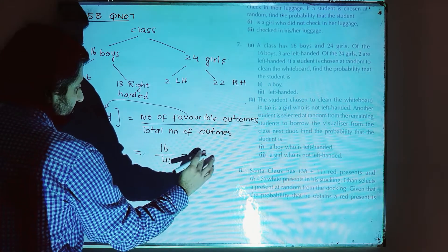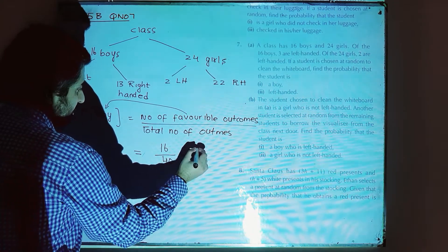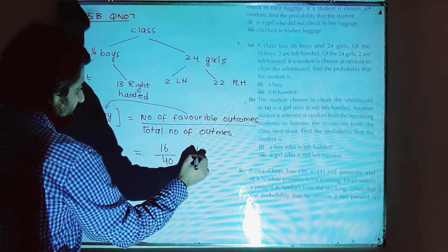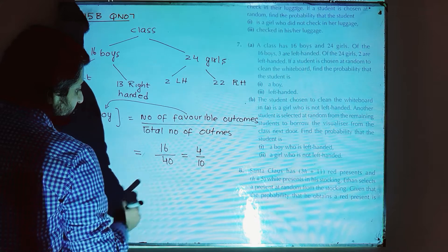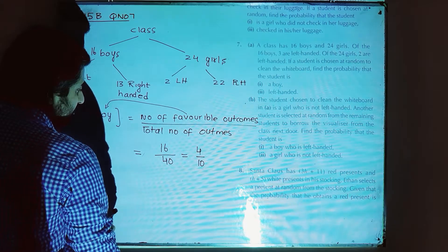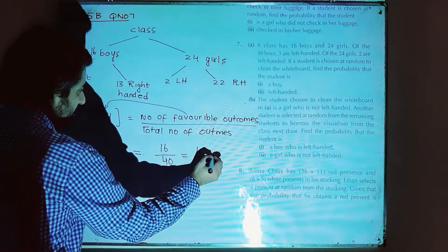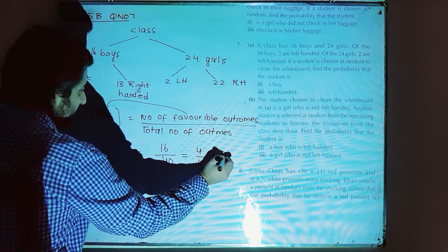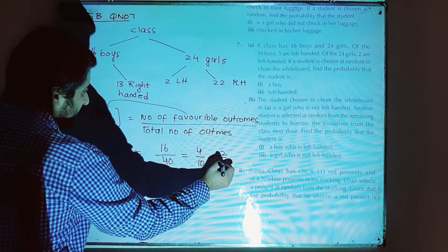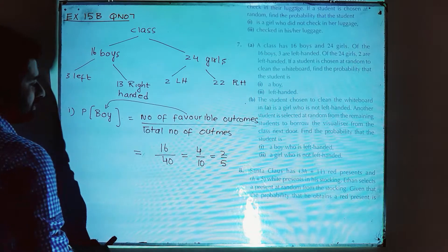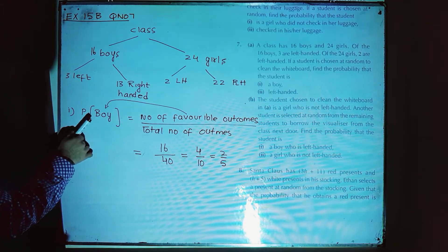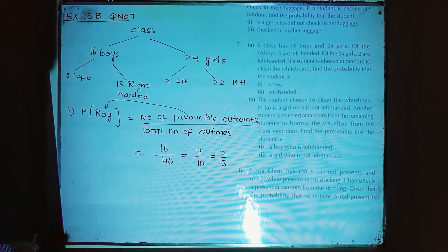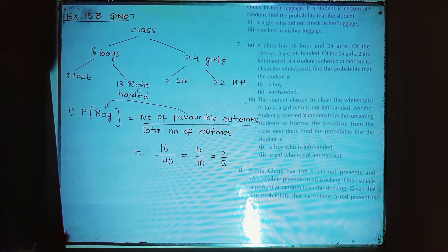After simplification: 16 over 40 simplifies to 2 over 5. So this is the answer — the probability that a boy will clean the whiteboard is 2/5.